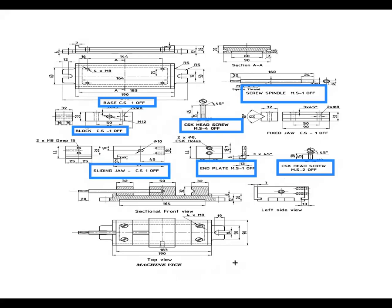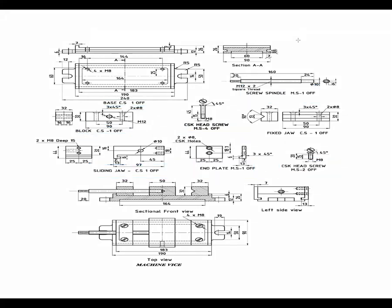With the help of all these components we have to assemble a machine vise. Different dimensions are used, and we have to use the same dimensions while drawing a machine vise.